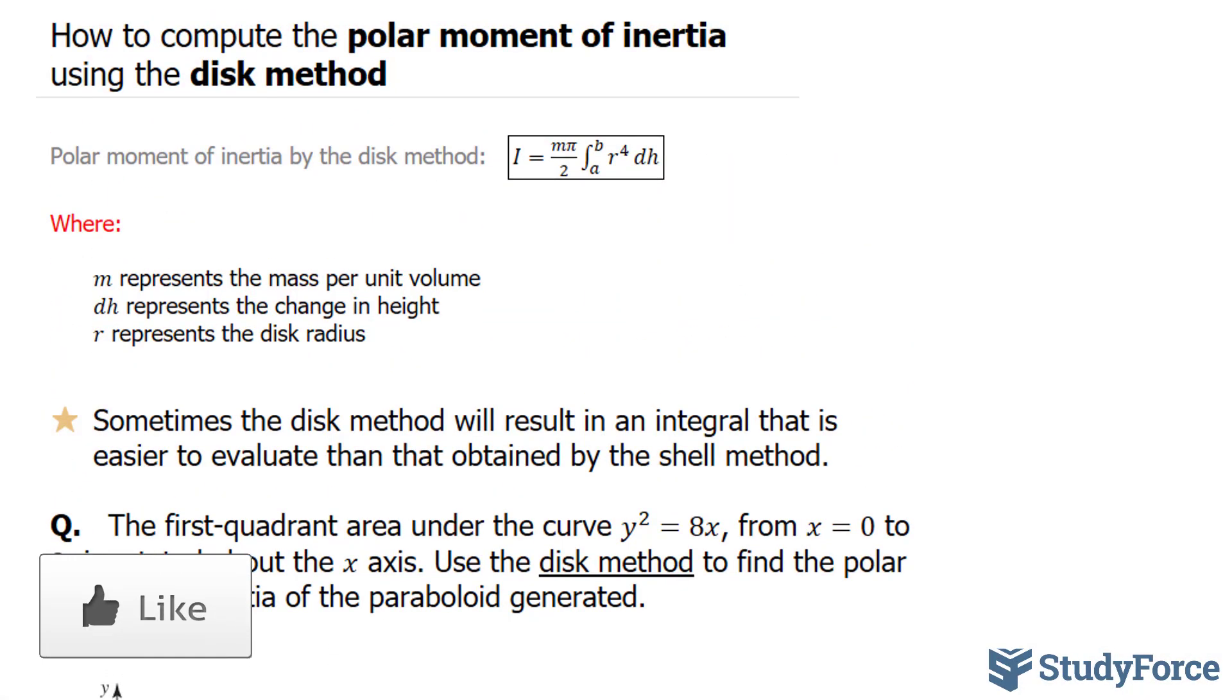Let's discuss the formula for a moment. We have I is equal to m times pi over 2 times the integral between a and b for the integrand r to the power of 4 dh. Where m represents the mass per unit volume. That's not given in our question. dh represents the change in height of the disks.